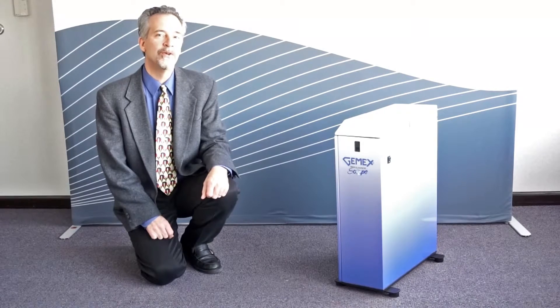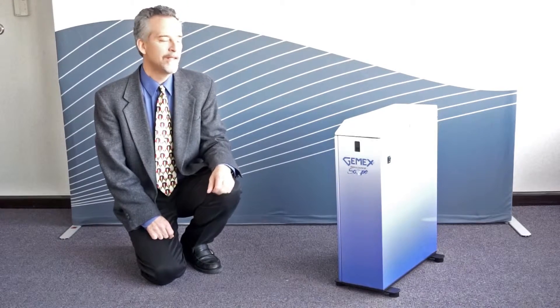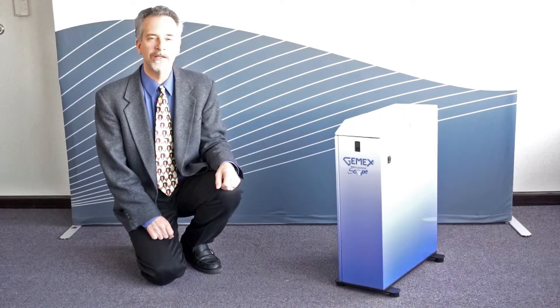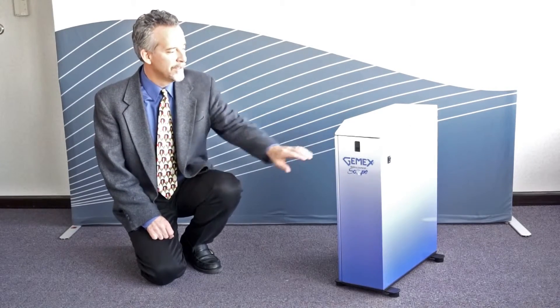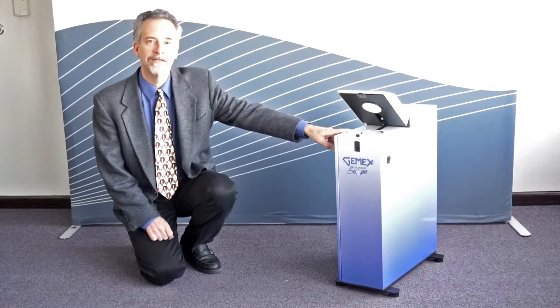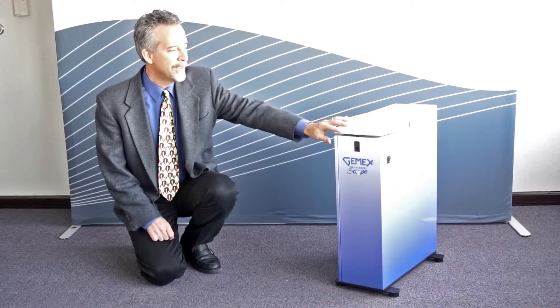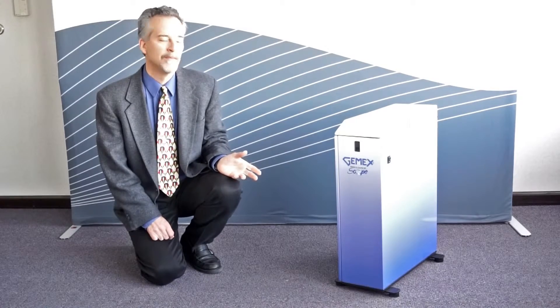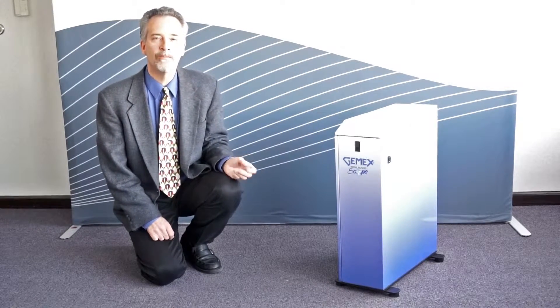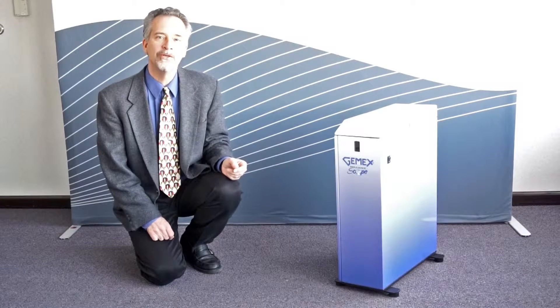This is the GemX BrilliantScope Analyzer. There are over 270 of these installed around the world, mostly in cutting factories. The diamond is placed face down in the glass and they cover it and they run it. I have a video we shot a few years ago that shows the entire operation of the BrilliantScope. Let me show you now.